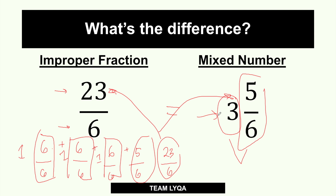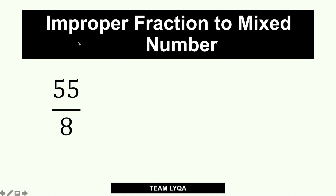So how do you convert it? If you practice enough, this becomes automatic — when you see 23 over 6, you instantly know what to do. But let me give you a breakdown. If you have an improper fraction and need to convert it to a mixed number, here's an example: you have 55 over 8. First, check — is 55 bigger than 8? Yes, so it is an improper fraction.